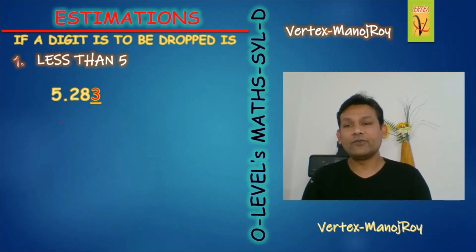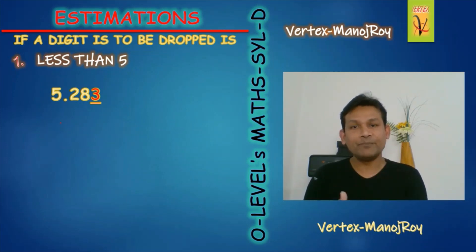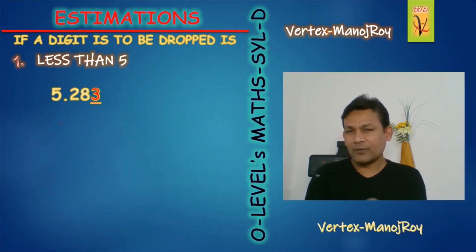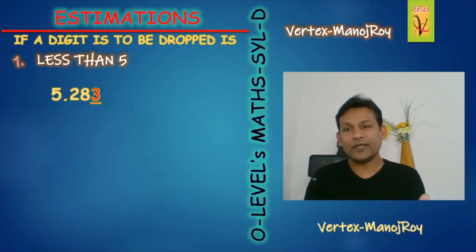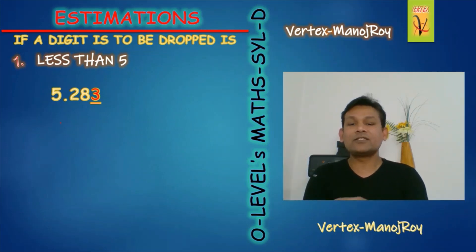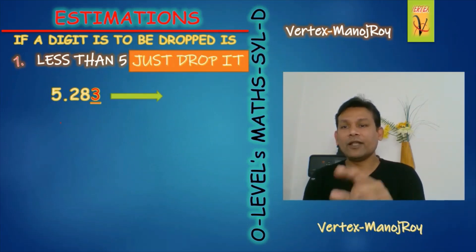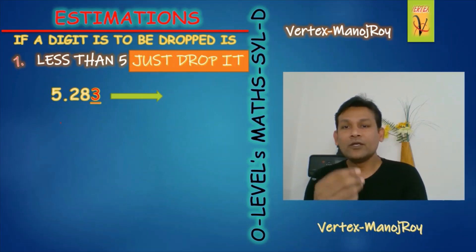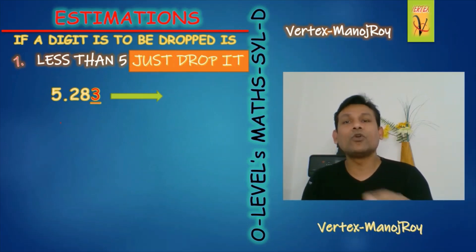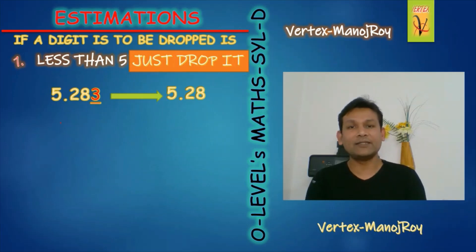Case one example: 5.283 — I want to drop this 3, which I have underlined. Is 3 more than five, less than five, or equal to five? It is less than five. So just drop it. Whenever a digit to be dropped is less than five, just drop it and write the answer. The answer is 5.28. Very simple.